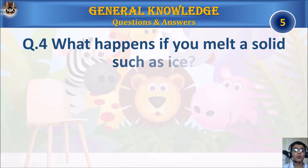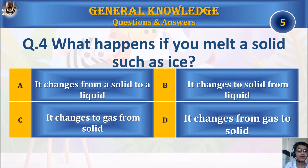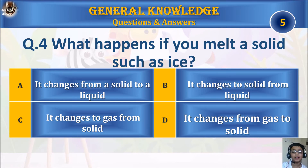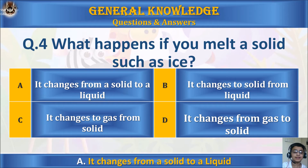Question 4: What happens if you melt a solid, such as ice? A: it changes from a solid to a liquid. B: it changes to solid from liquid. C: it changes to gas from solid. Or D: it changes from gas to solid. Your time. The answer is A: it changes from a solid to a liquid.